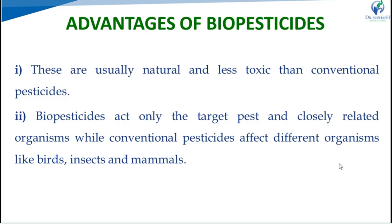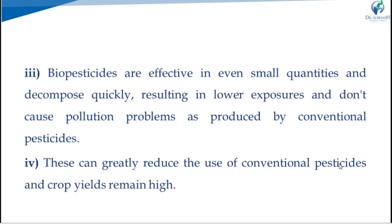Advantages of biopesticides. These are usually natural and less toxic than conventional pesticides. Second, biopesticides affect only the target pest and closely related organisms, while conventional pesticides affect different organisms like birds, insects and mammals. Third, biopesticides are effective in even small quantities and decompose readily, resulting in lower exposure and don't cause pollution problems as produced by conventional pesticides. This can greatly reduce the use of conventional pesticides and crop yields remain high.